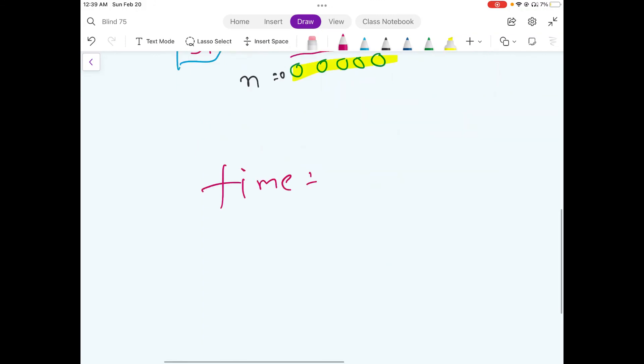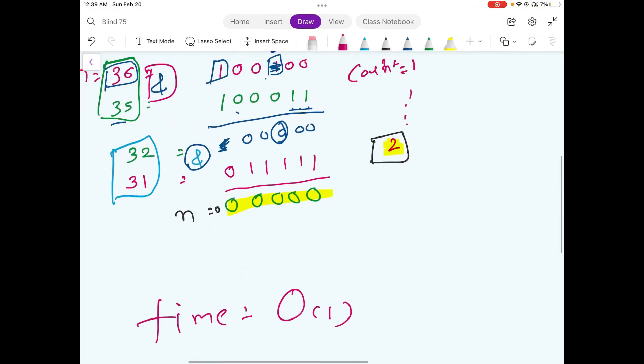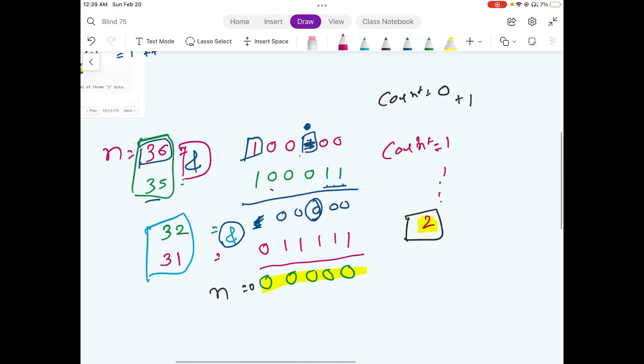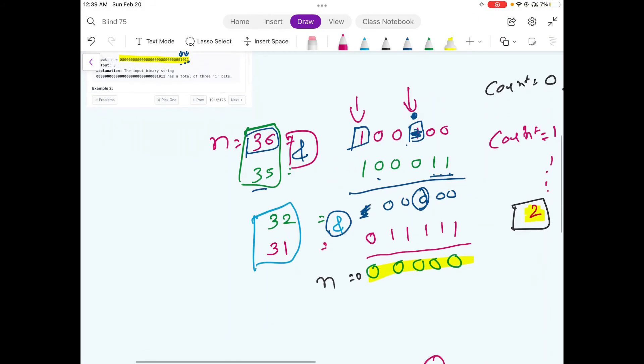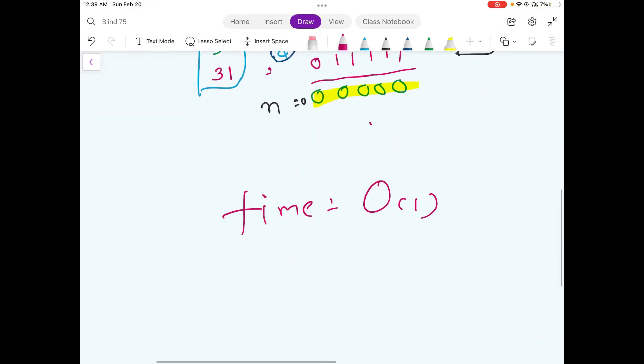The time complexity for this solution is also big O of 1, which is a constant time. But the thing is, the number of loop iterations that we have to go through would only be equivalent to whatever the value of 1 we are given in the original input array and we don't have to run the loop 32 times like the previous solution.